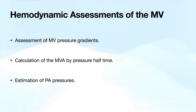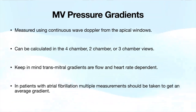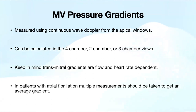For hemodynamic assessment, we want an assessment of the pressure gradient across the valve, calculation of mitral valve area by pressure half-time, and estimation of pulmonary artery pressures. Pressure gradients across the mitral valve are done using continuous wave Doppler from the mitral inflow from the apical windows—usually the apical four-chamber, but also looking at two-chamber and three-chamber. Transmitral gradients are flow and heart rate dependent, so it's important to comment on the heart rate. In patients with atrial fibrillation, take multiple measurements to account for beat-to-beat variability and get an average gradient.